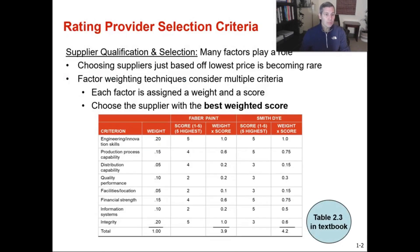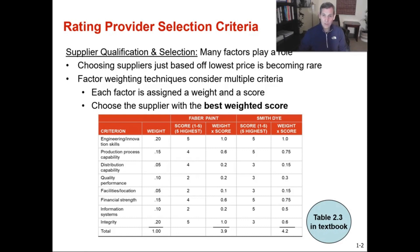Rating provider selection criteria is covered in table 2.3 in the textbook. Many factors play a role in determining which suppliers we want to use or outsource something to. Choosing suppliers based off of just the lowest price is not really a practice done these days. Usually when we're outsourcing something, we're looking at an organization that can deliver high quality goods with on-time deliveries and also have a competitive cost — maybe not the lowest cost, but a competitive cost.